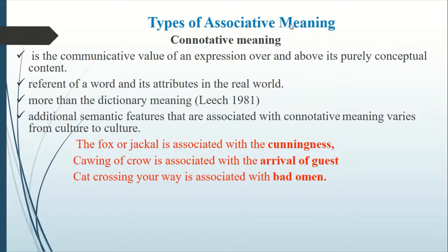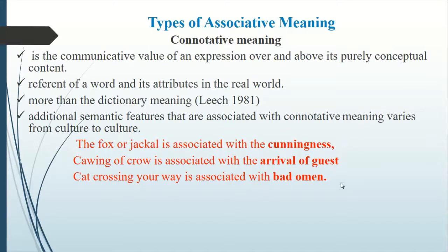The first type of associative meaning is connotative meaning. Connotative meaning is the communicative value of an expression over and above its purely conceptual content — the referent of a word or its attributes in the real world, beyond the dictionary meaning. Additional semantic features associated with connotative meanings vary from culture to culture. For example, the fox or jackal is associated with cunningness, the cooing of a crow is associated with the arrival of a guest, and a cat crossing your path is associated with bad omen in some cultures.